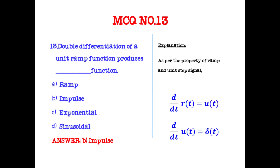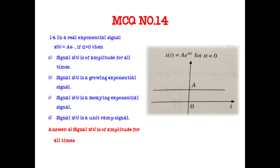Double differentiation of the unit ramp function produces which function? The answer is the impulse function. d/dt of r(t) = u(t), and differentiating again, d/dt of u(t) gives δ(t). So the answer is impulse.